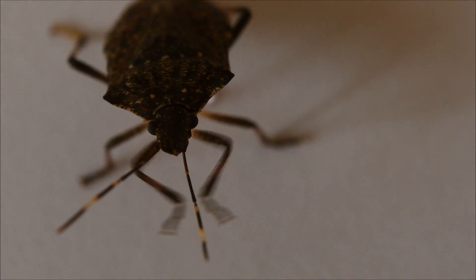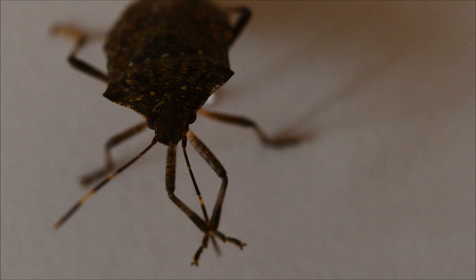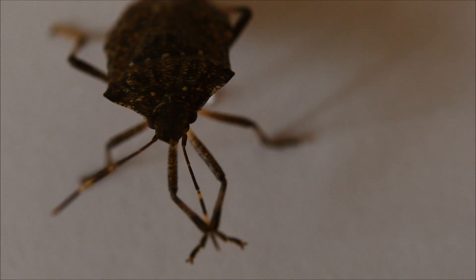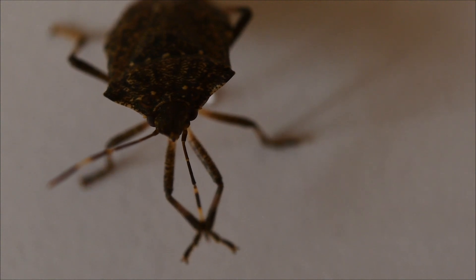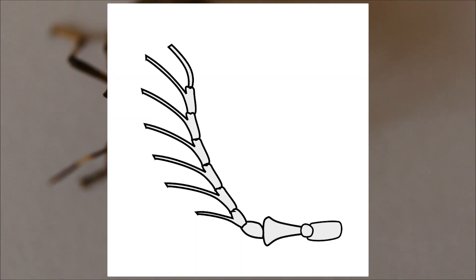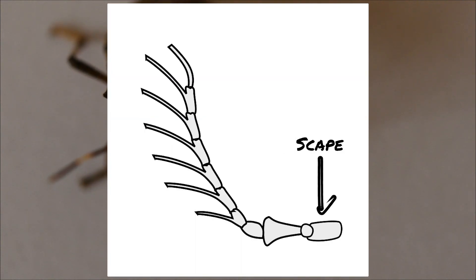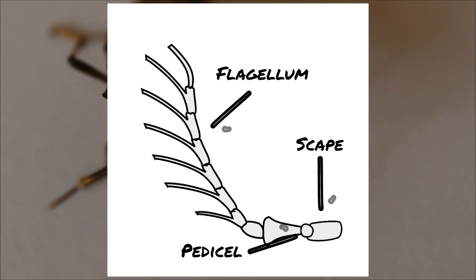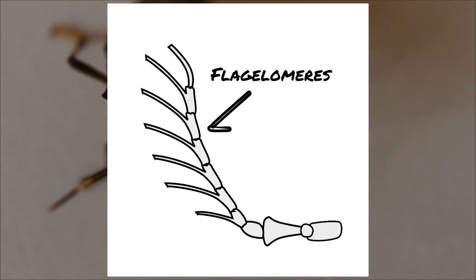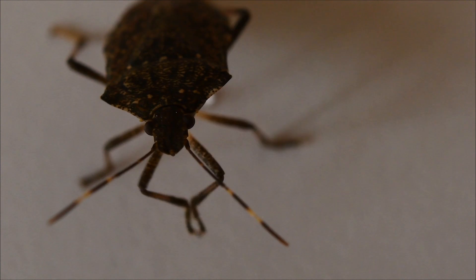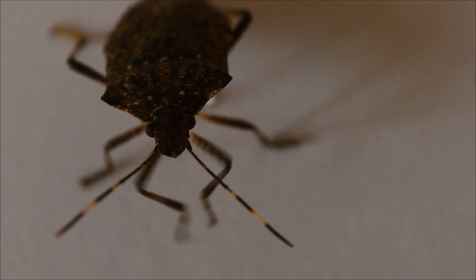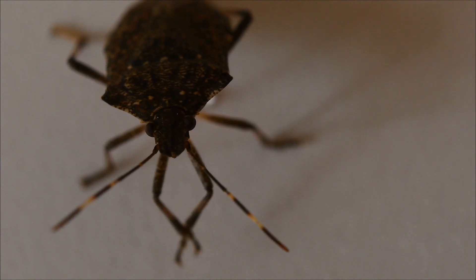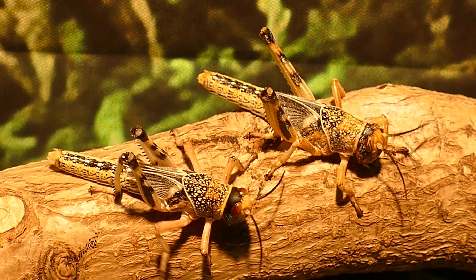The antennae serve as the primary sensory organs of insects. These organs can be divided into three main regions: the scape, the pedicel, and the flagellum. The flagellum is heavily segmented into subregions called flagellomeres. Antennae are incredibly important organs and will be featured much more in-depth in future videos.